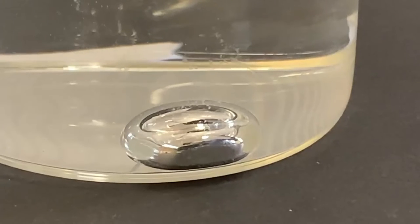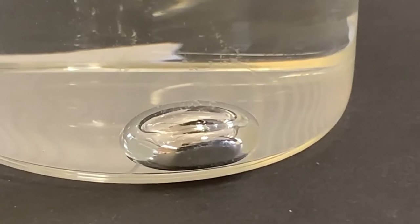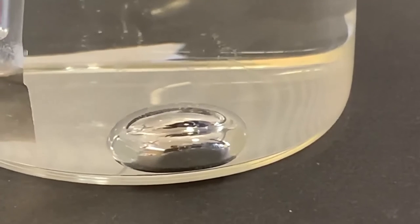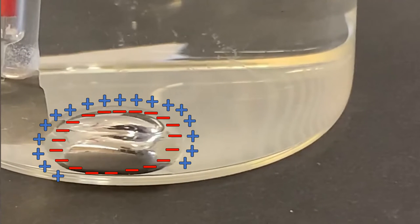The shape of the droplet depends upon its surface tension, and this depends upon how these electric charges are distributed around the surface.